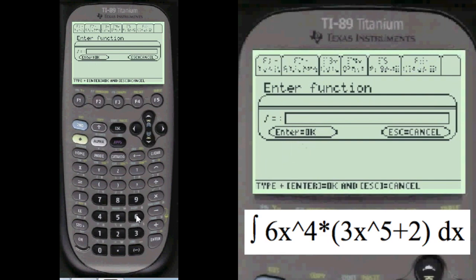Alpha 6 times x to the 4th power times the quantity parentheses 3 times x to the 5th power plus 2. Erase that one. Close off the parentheses to the 6th power.